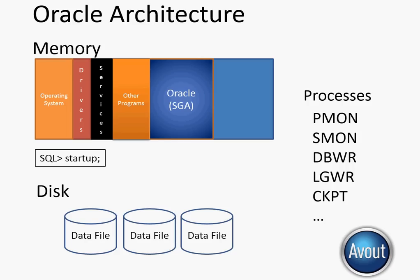Additional background processes include the log writer, checkpoint, and more depending on what options you have installed. All of these different processes make sure that what's happening inside the SGA and what's happening inside the data files stay synchronized. They're also designed so that if something bad happens — like a power outage, a data file getting corrupted or going offline — Oracle DBAs can recover their instance relatively easily. All of these processes exist to help you as a DBA if something catastrophic happens.